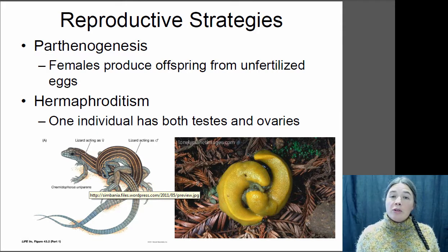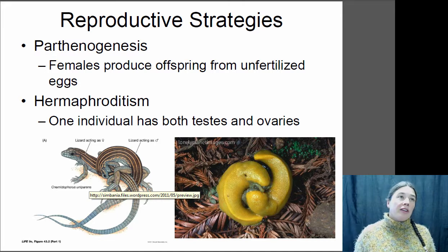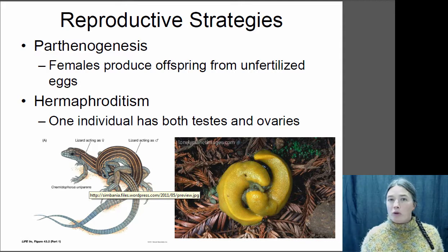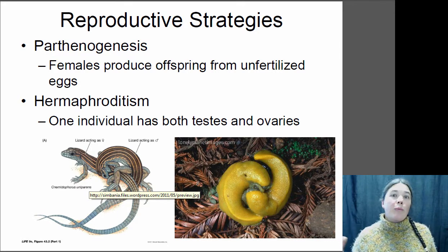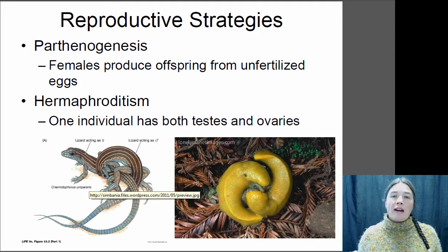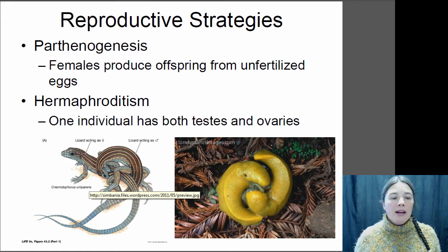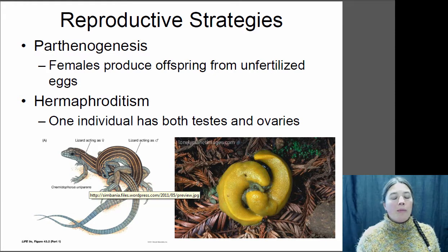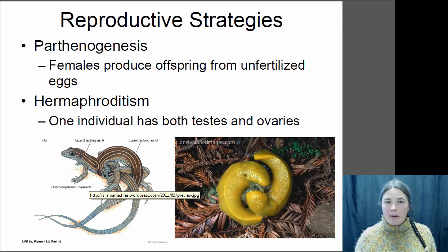Some vertebrates can actually reproduce asexually through what's called parthenogenesis. In parthenogenesis, the female lays an unfertilized egg and that egg develops normally into an adult without any contribution of sperm from a male — so females can basically just replenish themselves. In Jurassic Park, they discover that the dinosaurs, which are supposedly all female, start laying parthenogenesis eggs that develop into young towards the end of that movie.